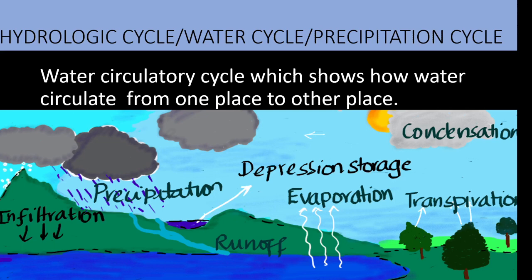A hydrologic cycle is basically a water circulatory cycle. It shows how water gets converted and the cycling motion of water. In the water cycle, evaporation occurs from the surface of oceans, lakes, water bodies etc., and the evaporated water molecules condense to form clouds, with fine dust particles acting as condensation nuclei.